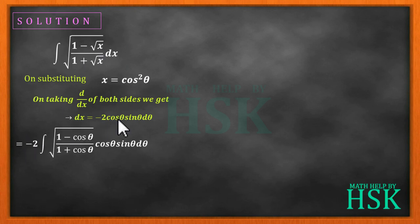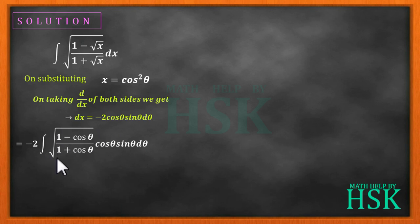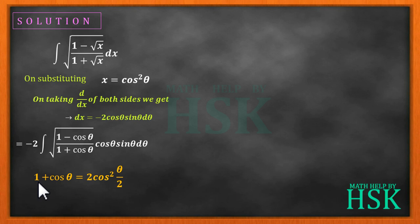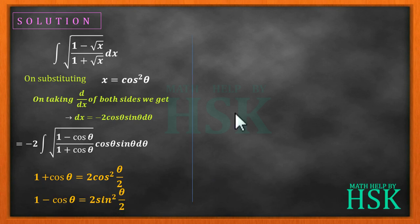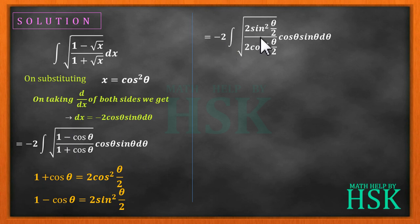Now I'm going to perform the substitution. The minus 2 is written outside, cos θ sin θ dθ instead of dx, and for square root of x I have written cos θ. So I get this as equal to minus 2 times integration of square root of (1 minus cos θ) upon (1 plus cos θ) into cos θ sin θ dθ. Further, to simplify the terms inside the square root, I place 1 plus cos θ equal to 2 cos²(θ/2) and 1 minus cos θ equal to 2 sin²(θ/2).